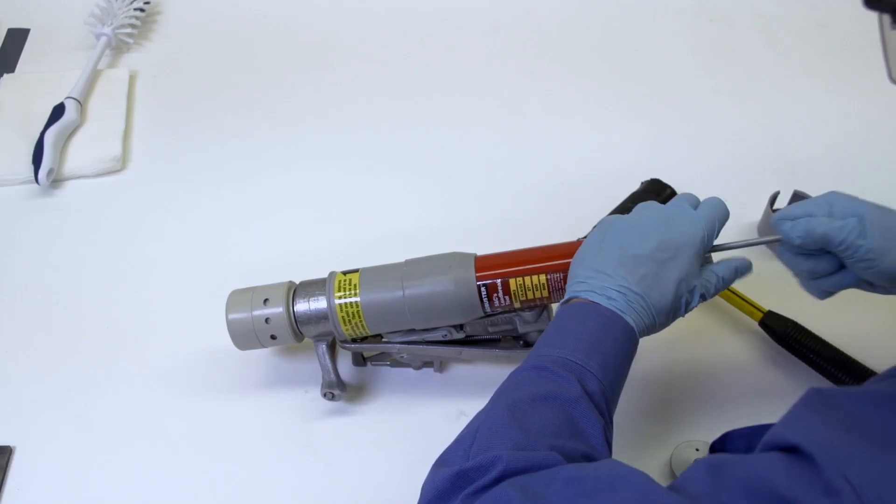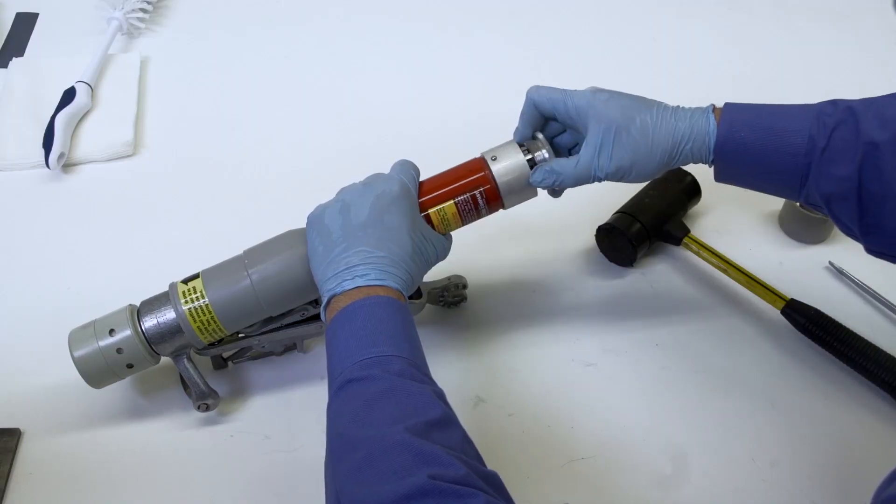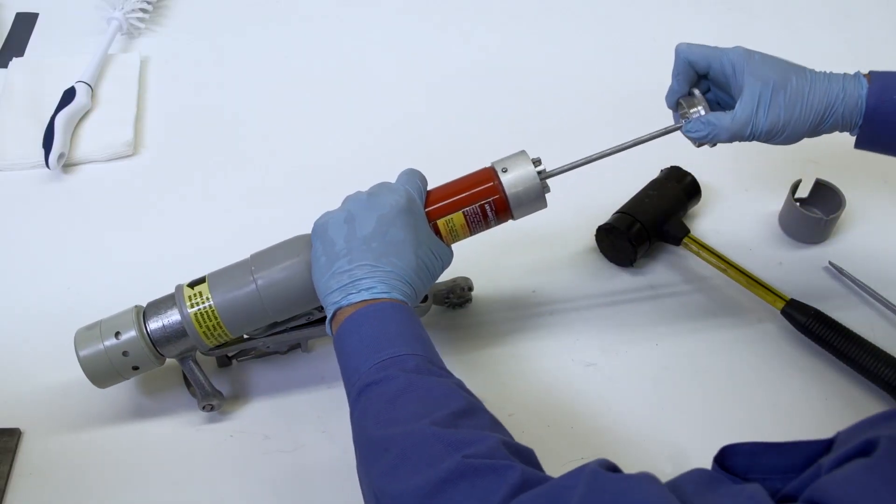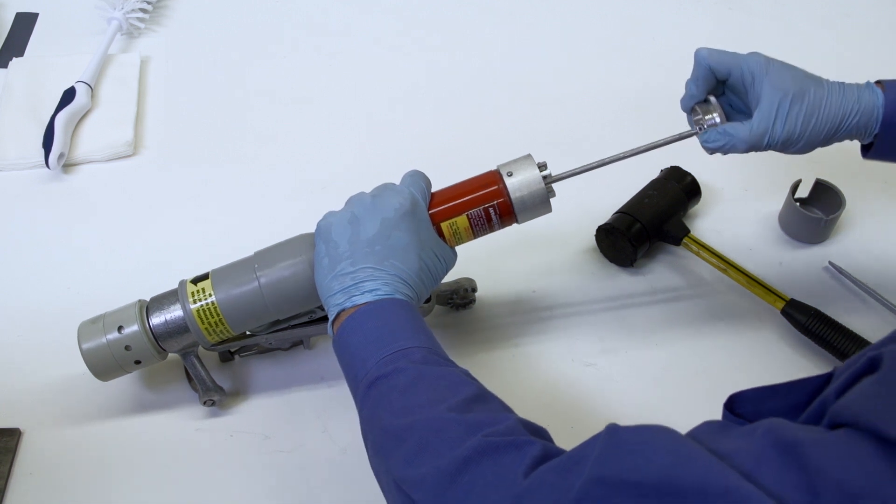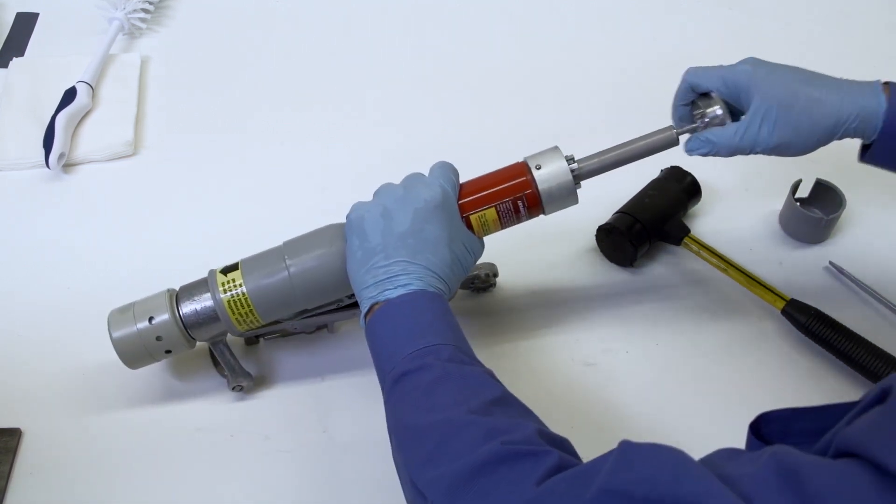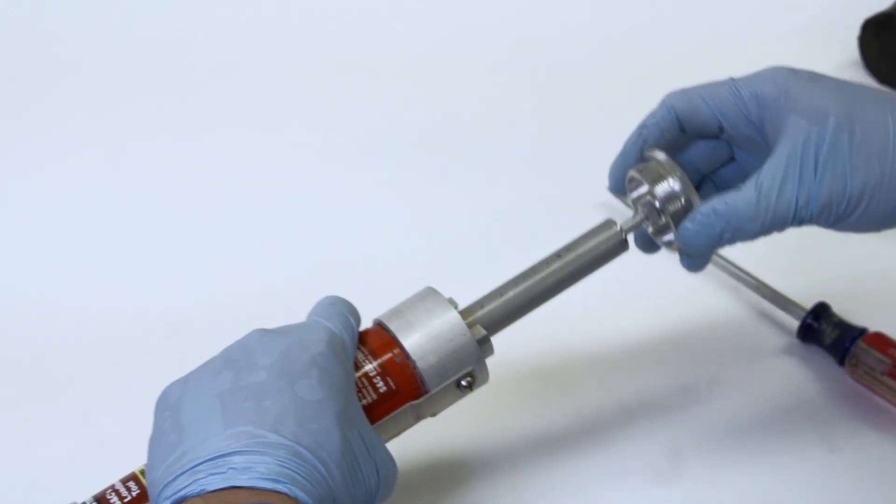Then pull the end cap out until the Loadbuster trips. Caution! Keep fingers clear of the end of the chassis when tripping the Loadbuster. The contact tube is spring loaded and will move quickly towards the trigger assembly. Failure to keep fingers clear could cause minor injury.